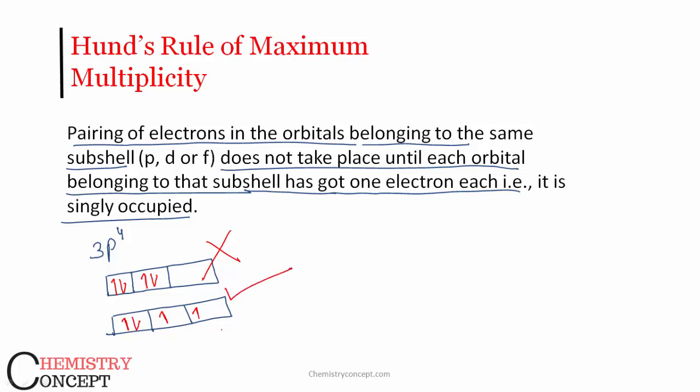That means first of all, all three orbitals, or each of the three orbitals, will get one electron each, and then only if electrons are left will the pairing start.